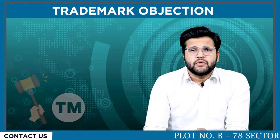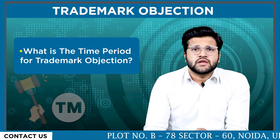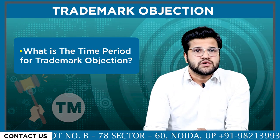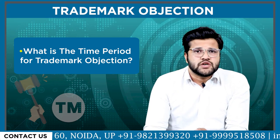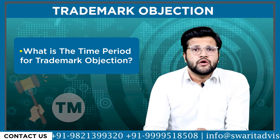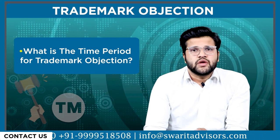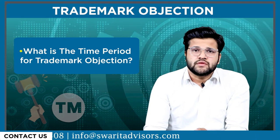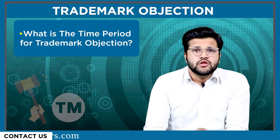The next topic for discussion is what is the time period for trademark objection. Any third party can file for the objection of trademark within the period of three months, which may be extended to an additional one month from the date of publication of such trademark.